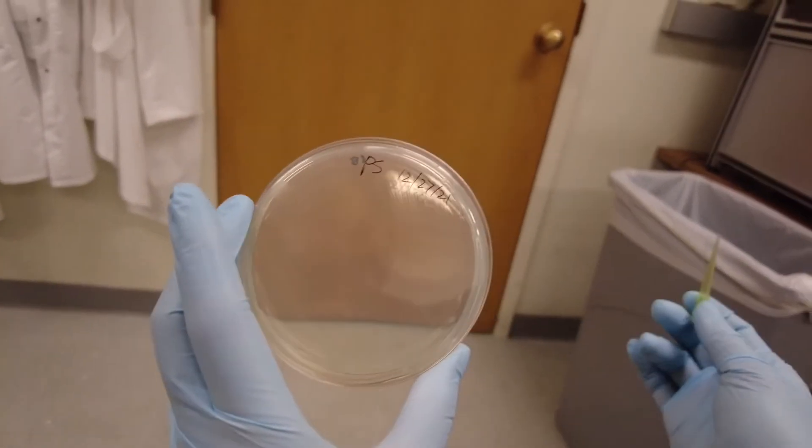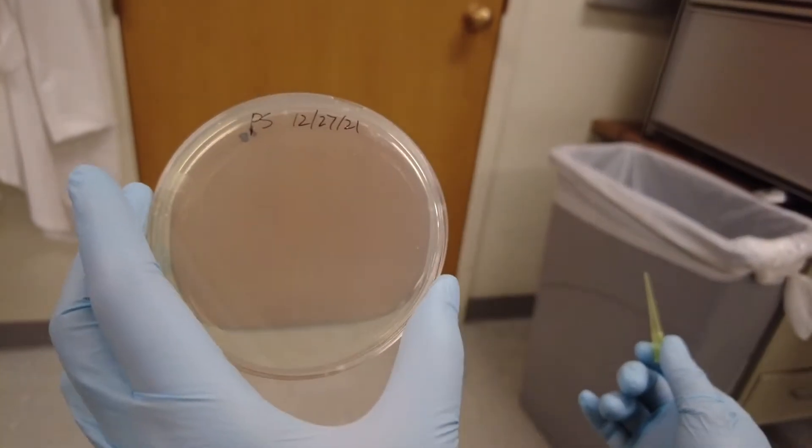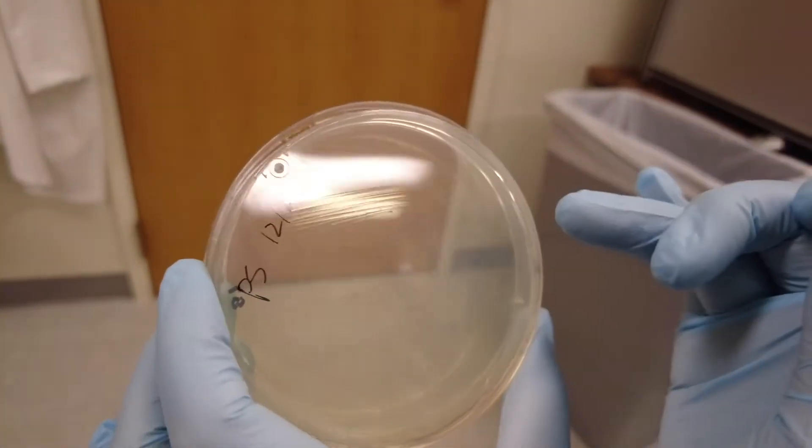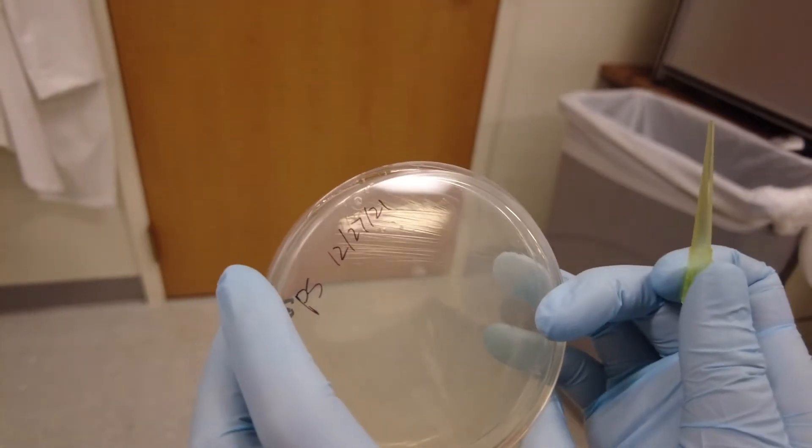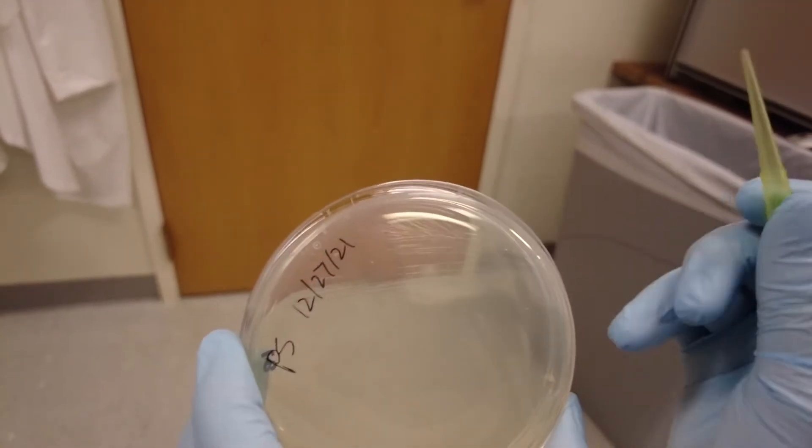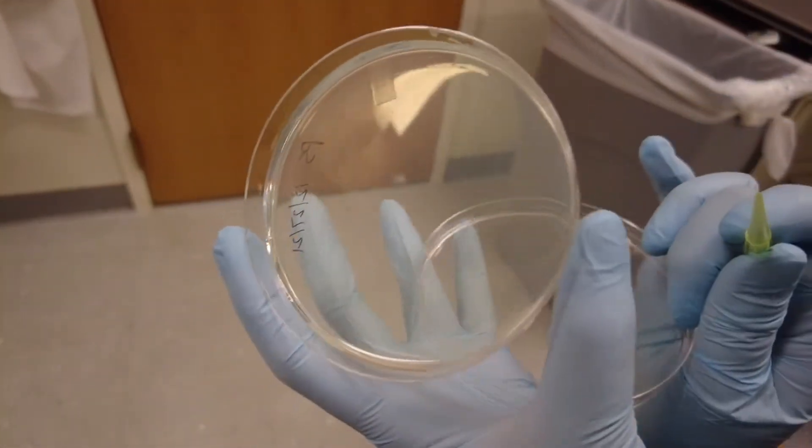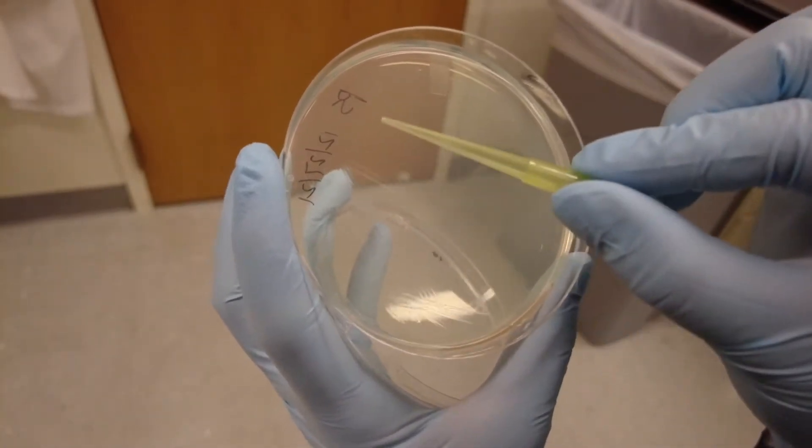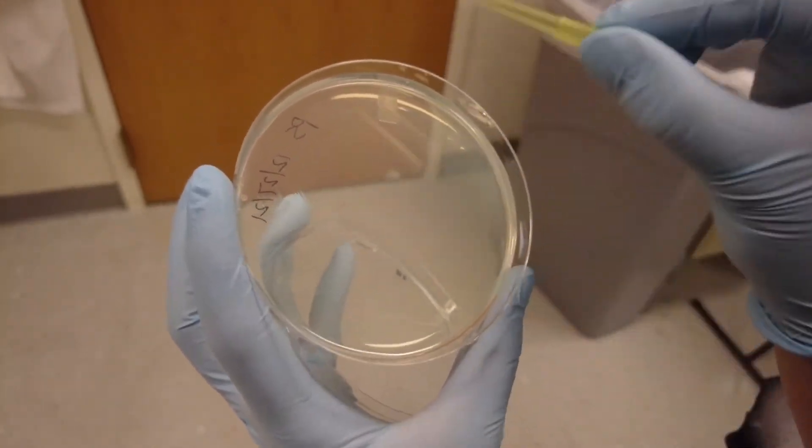Streaking out for single colonies. You generally don't need to do this unless you see contaminants in your things. Just now I streaked out a bunch of bacteria here, so this is where the heavy streaks are. Basically, when you streak out for single colony, you want to use a fresh tip. This tip has never touched any bacteria. You only want to cross path with the heavy streak area once.